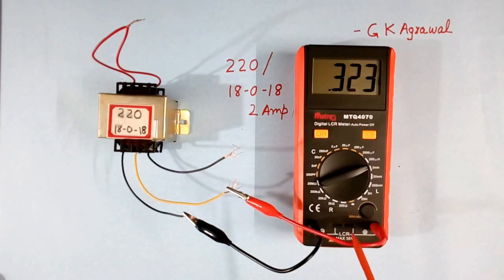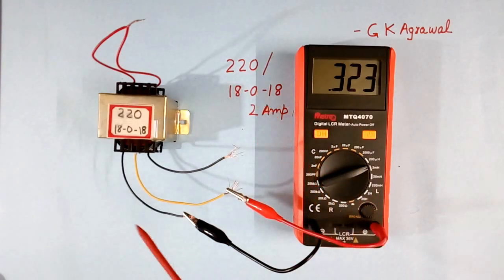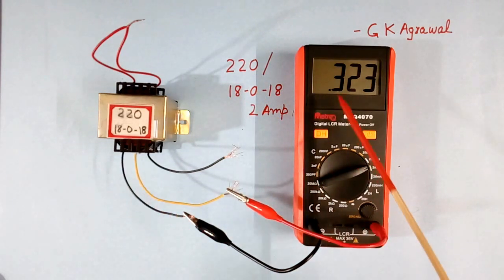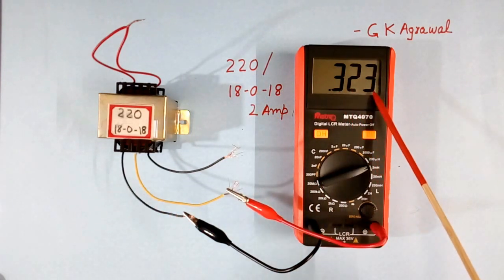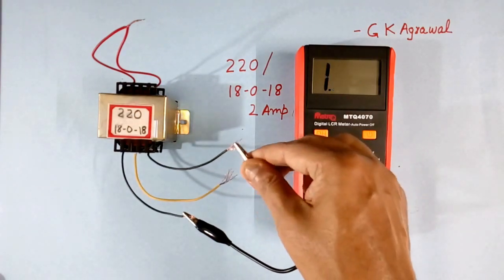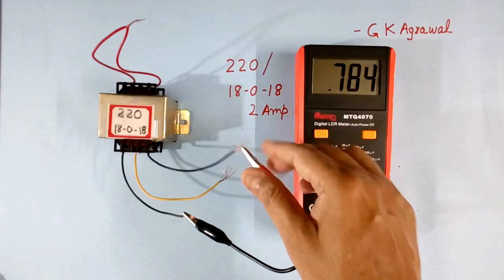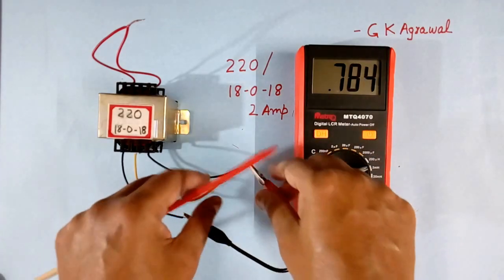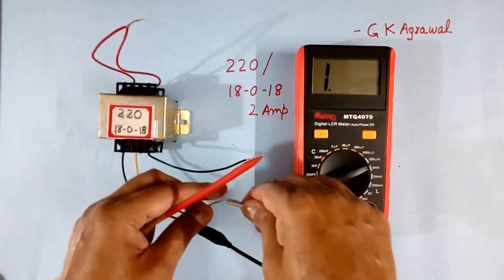Now I have connected the LCR meter across 18 and 0, between this and this. It is showing 0.323 millihenry. Earlier it was showing more here. See 0.78. This value has come down.